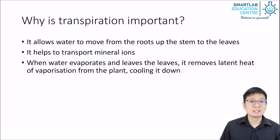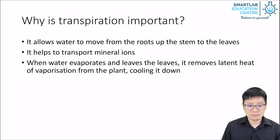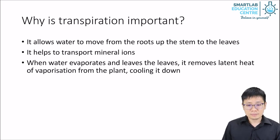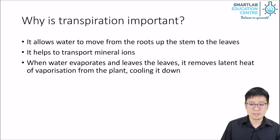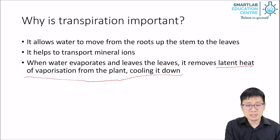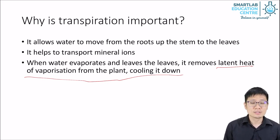Why is transpiration important? It allows water to move from the roots up the stem to the leaves. It helps to transport mineral ions and move water. It also helps cool the plant down — when water evaporates from the leaf, it takes some heat away with it. We call that the latent heat of vaporization. It's just like in our bodies: when we sweat and the sweat evaporates from our skin, it takes away heat, helping to cool us down.